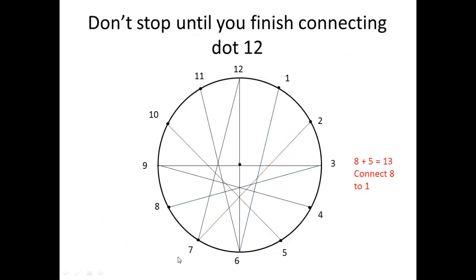When you get to 8, you're going to get 8 plus 5 equals 13. Now, you don't have a 13 o'clock, but you do have a 1 o'clock. That comes right after 12. That means you're going to connect 8 to 1. Don't stop. Keep going. Look at 9, add 5, that will become 14. That means you're going to connect 9 to 2. Don't stop until you are finished connecting dot 12. And dot 12 should end up with dot 5.